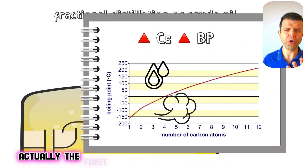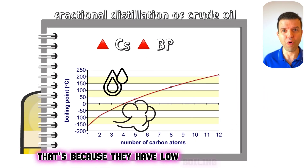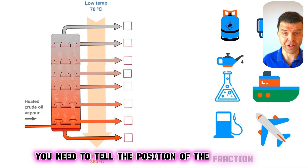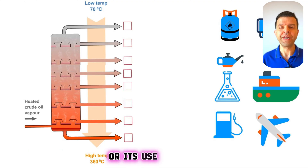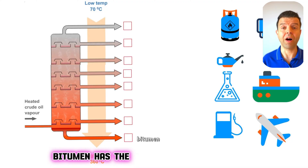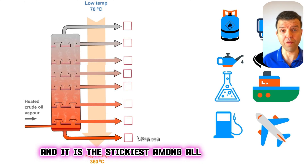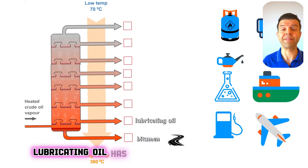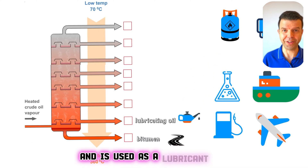The first four hydrocarbons at the top of the column are all gases because they have a low boiling point. In the IGCSE exam, you need to state the position of the fraction and its use. Starting at the bottom: the lowest fraction is bitumen, which has the highest boiling point and is the stickiest. The next fraction is lubricating oil, which has a lower boiling point than bitumen and is used as a lubricant.